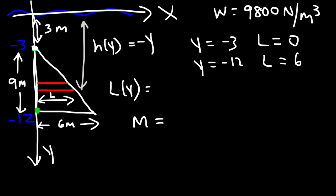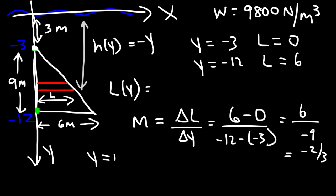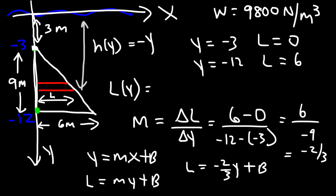To find the equation, we first determine the slope: the change in l divided by the change in y. That's (6 minus 0) divided by (negative 12 minus negative 3), which gives 6 over negative 9, reducing to negative 2/3. Using the slope-intercept form l = my + b, the slope is negative 2/3 and we need to find b.